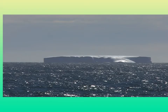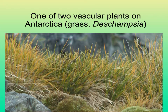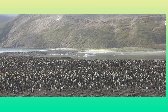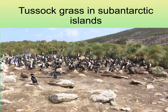Here's an ice plateau in Antarctica — not great plant diversity. Here's one of the two vascular plants in Antarctica: the grass Deschampsia, with a little bit of moss visible at the bottom. There are some interesting animals here, including penguins. Sub-Antarctic islands have slightly greater plant diversity, with tussock grasses and some interesting birds.